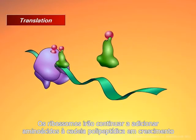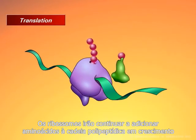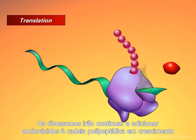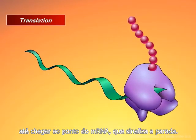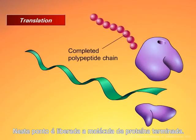The ribosome will continue to add amino acids to the growing polypeptide chain until it reaches a point along the mRNA that signals it to stop. At this point, it releases the finished protein molecule.